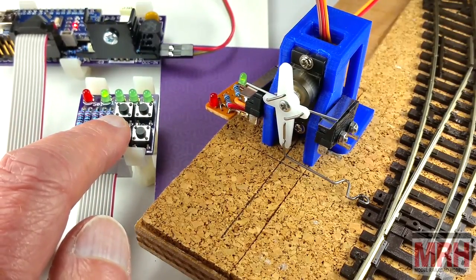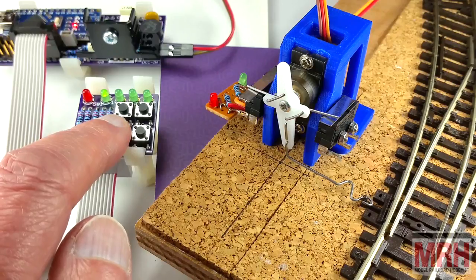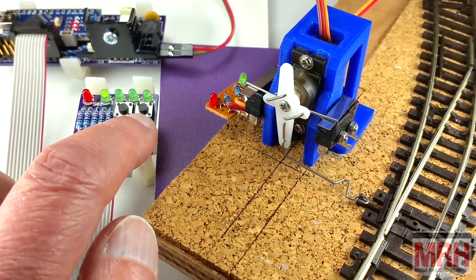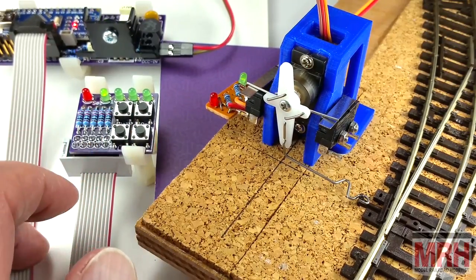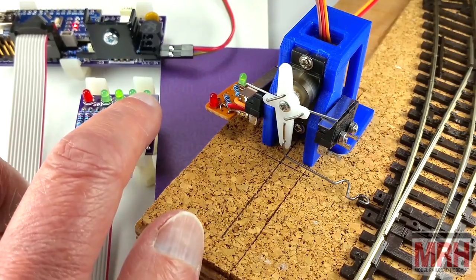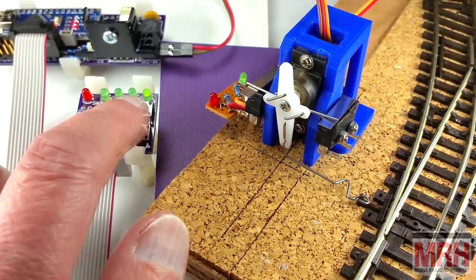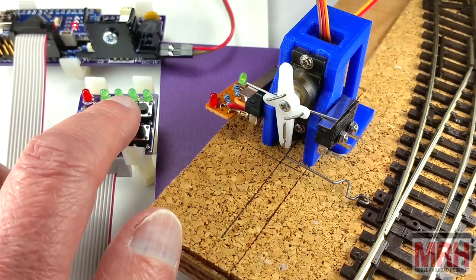We use the operate button to select the particular turnout. In this case it's turnout 1. And we can check its throw by pressing first left and then right. And as you can see, it's not quite right. So we switch off the operate function. All the LEDs extinguished.